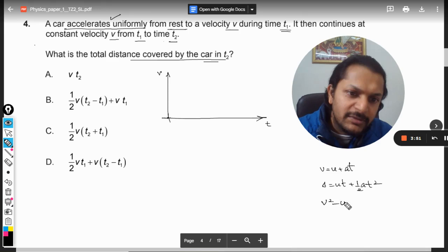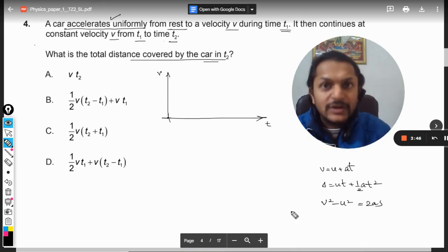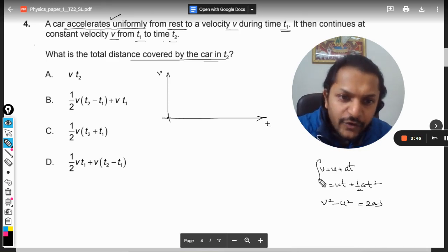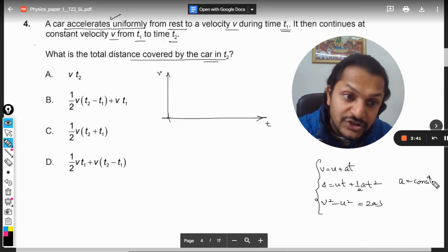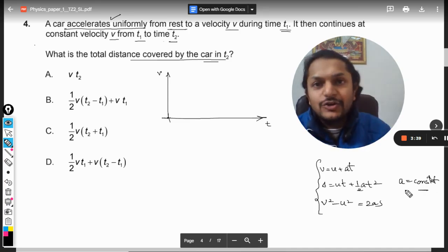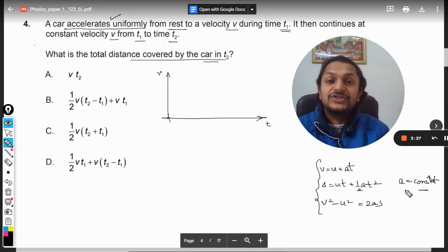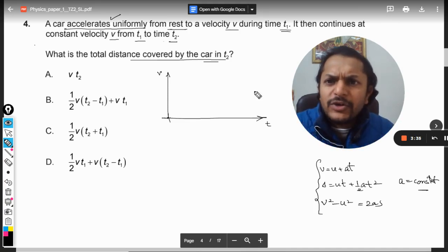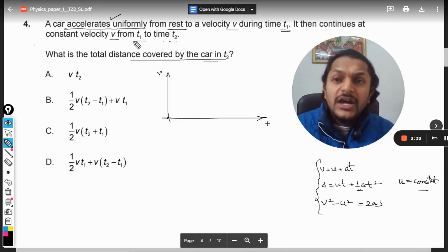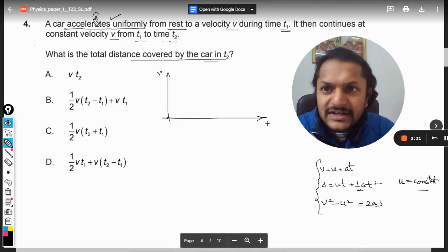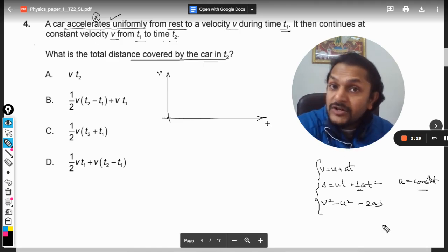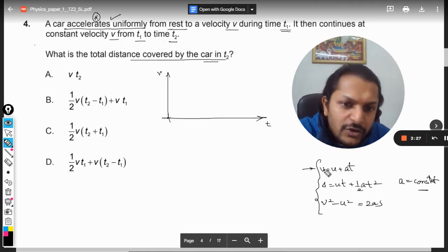Always remember that all these formulas of kinematics that we use, like V equals U plus AT, S equals UT plus half AT squared, or V squared minus U squared equals 2AS, all these formulas are valid only if the acceleration is constant. It means neither the magnitude nor the direction of the acceleration is changing, and this is what is known as uniform acceleration.